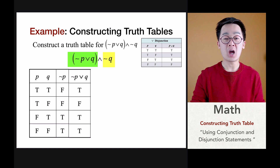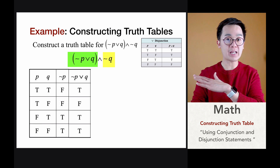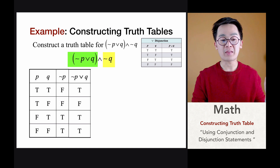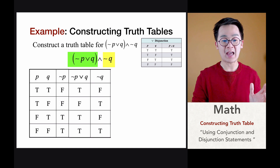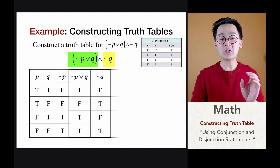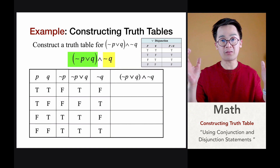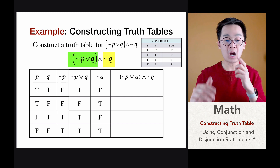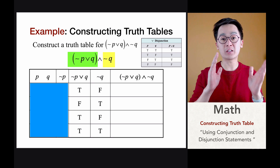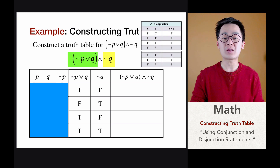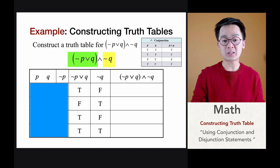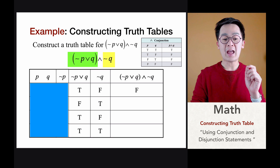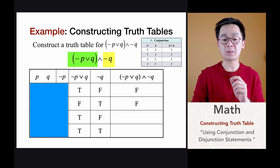Now that we have our column for not p or q, we look at the second group — not q — and negate the q column. So not q would be F, F, T, T. Since we're looking for the combination of the quantity (not p or q) AND not q, we ignore the first three columns and use conjunction on our latest two columns. In the conjunction operation, the only true statement is when both are true. So: T and F is false, F and T is false, T and F is false, and the last row T and T is the only one that is true.